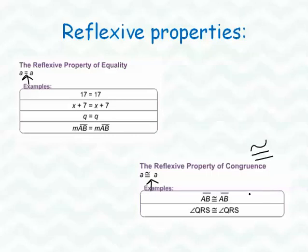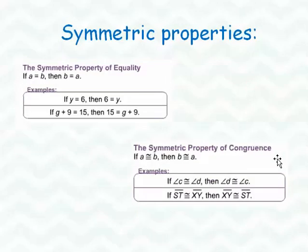So in these examples, line segment AB would be congruent to line segment AB. And angle QRS is congruent to angle QRS. The symmetric property, it says that if A is equal to B, then B is equal to A. We just flip them. So for the examples, we're saying if Y is equal to 6, then 6 is equal to Y. Another example, if G plus 9 is equal to 15, then 15 is equal to G plus 9. We just flip the order. The symmetric property of congruence again is the same thing, but we're using the symbol for congruent rather than the equal sign. So if angle C is congruent to angle D, then angle D is congruent to angle C.